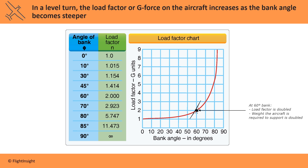At a load factor of 2, the weight the aircraft wings are required to support is doubled. So a 2,000-pound aircraft will need 4,000 pounds of lift to maintain altitude.